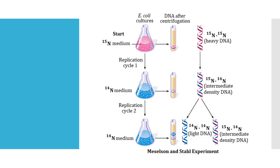They then grew this E. coli with heavy DNA in another medium containing normal nitrogen, N14, and extracted Escherichia coli just after 20 minutes — meaning one cycle of replication was completed. Recalling semi-conservative DNA replication, the DNA now contains one heavy N15 strand and one newly formed N14 strand. Such DNA is of intermediate density — lighter than heavy DNA but heavier than normal DNA containing only N14 — and it settles somewhere in the middle during centrifugation.